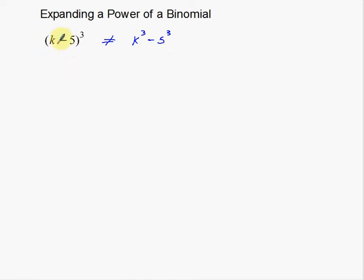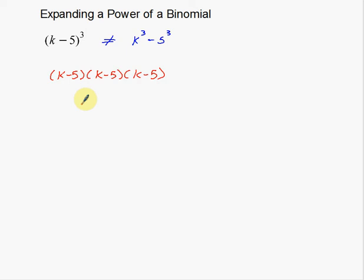So this is what we're actually supposed to do. We have (K minus 5) cubed — we have three of that quantity. So I'm going to rewrite this as (K minus 5) times (K minus 5) times (K minus 5). You're expanding by writing it out like this. There is a way to quickly do this using Pascal's Triangle, which has a pattern associated with higher powers of binomials, but I don't have time to cover Pascal's Triangle here — we're just going to stick with the basics.